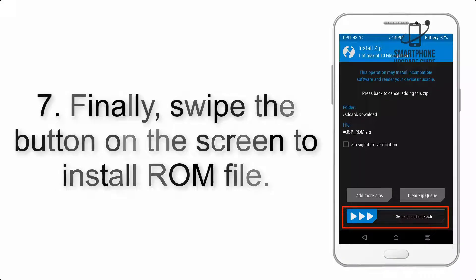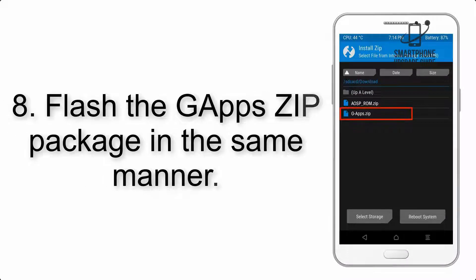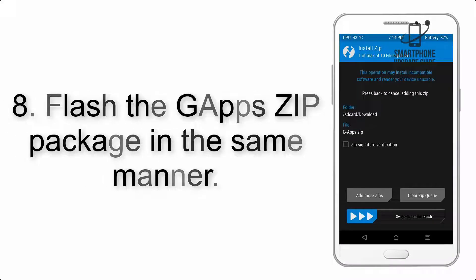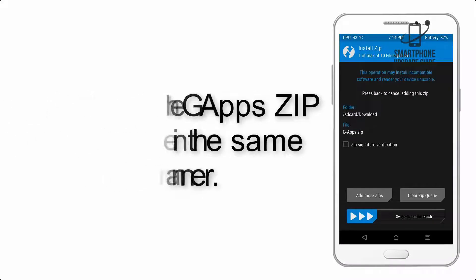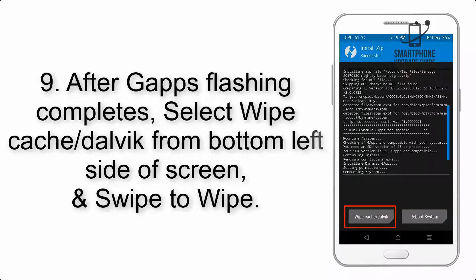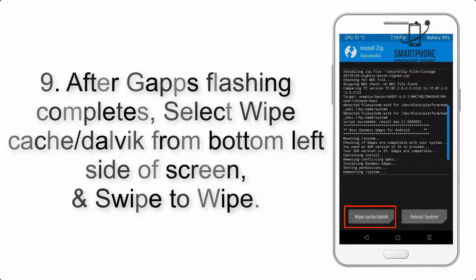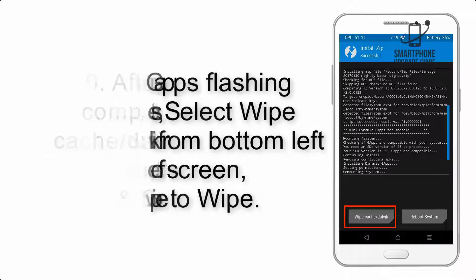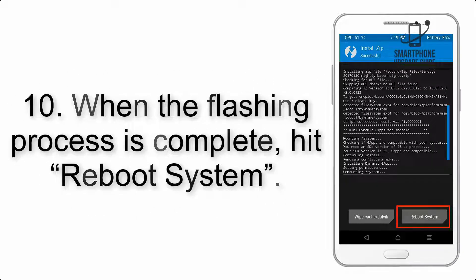Step 8: Flash the GApps zip package in the same manner. Step 9: After GApps flashing completes, select Wipe Cache and Dalvik from the bottom left side of the screen and swipe to wipe. Step 10: When the flashing process is complete, hit Reboot System.